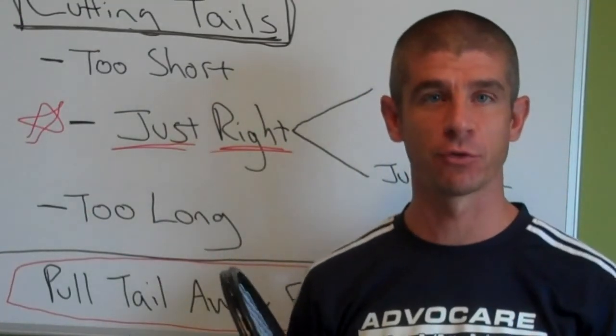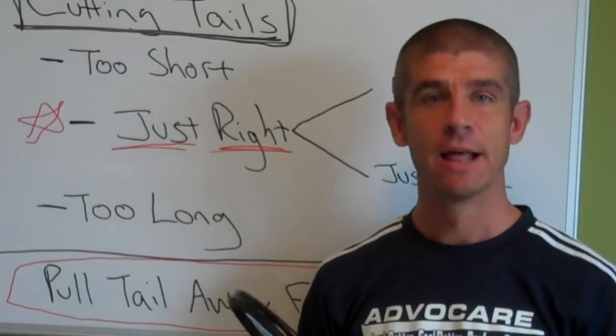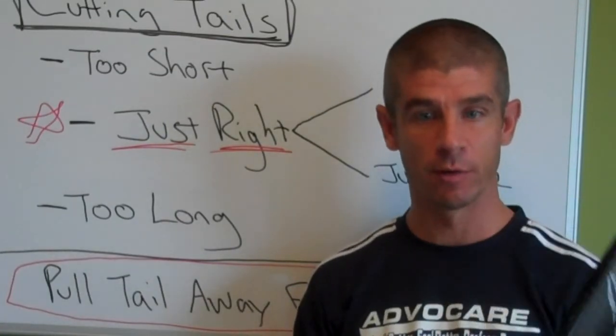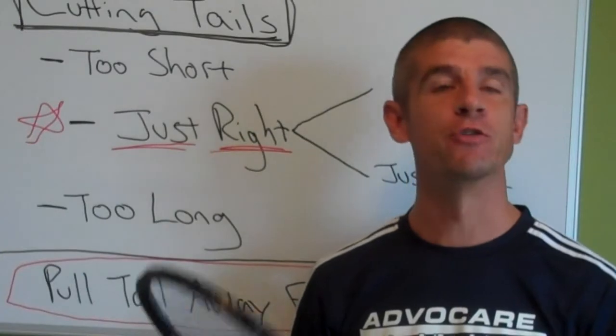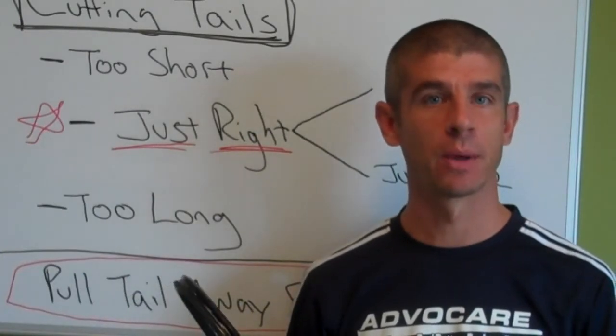So basically when you tie off a string and you tie your knot, then you're left with that long tail of a certain length of string left over that you need to cut off.